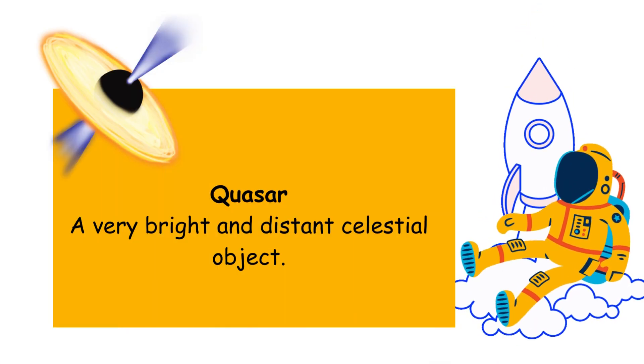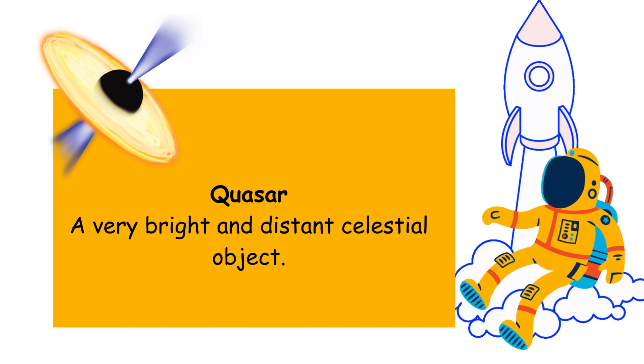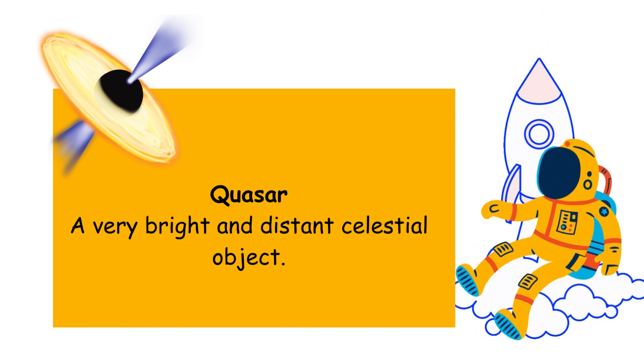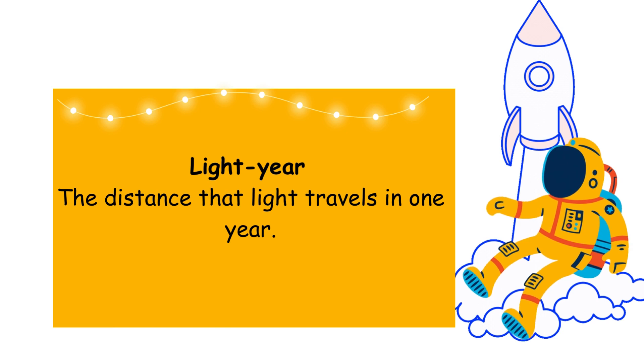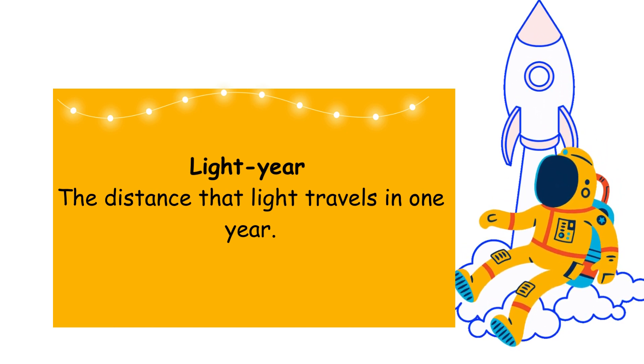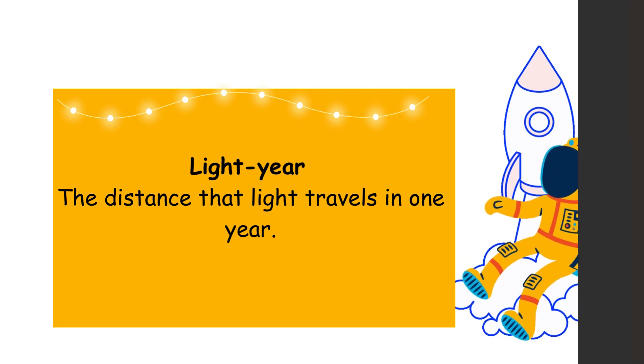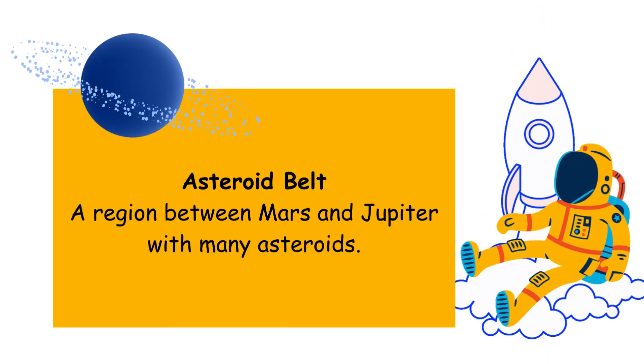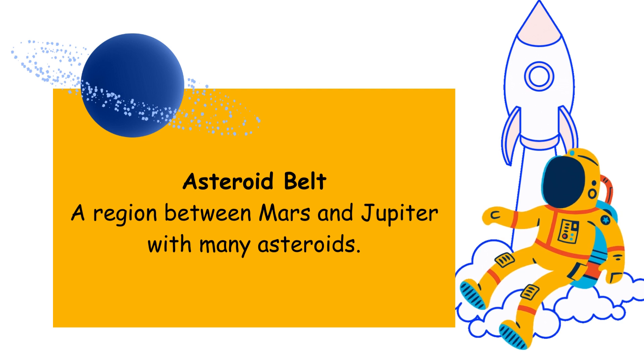Quasar: a very bright and distant celestial object. Lightyear: the distance that light travels in one year. Asteroid belt: a region between Mars and Jupiter with many asteroids.